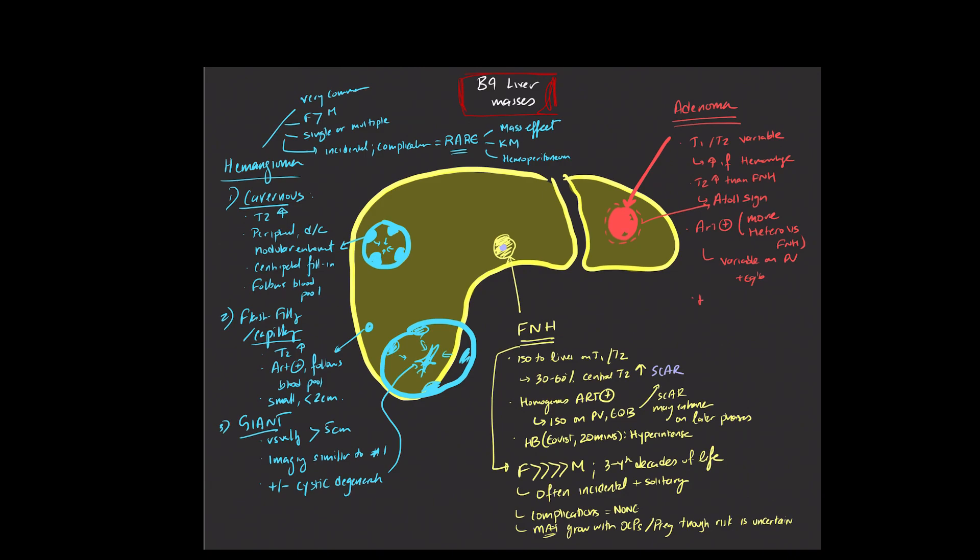On the hepatobiliary phase, when you use something like EOVIST, it is classically hypo-intense, but it's good to know in the back of your mind that even that appearance can be variable. So you may encounter patients with adenomas that are iso or slightly hyper-intense, and so overall you really have to look at the whole picture, and oftentimes you may need to do a biopsy to diagnose this.